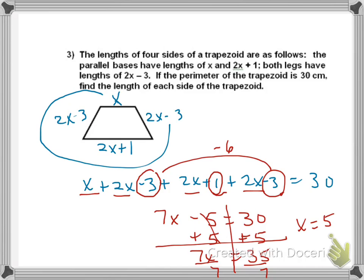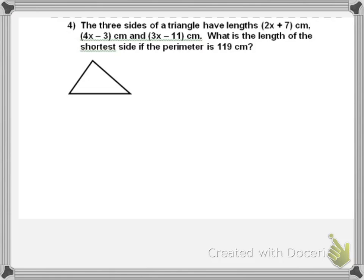So, this side is 5. This side is 10 minus 3, which would be 7. This side is also 7. And this side would be 5 times 2 is 10 plus 1 is 11. And that's that.